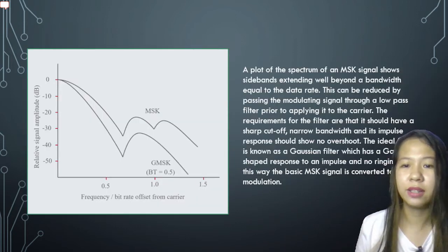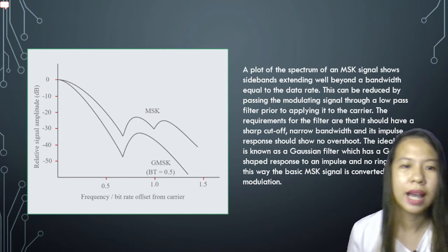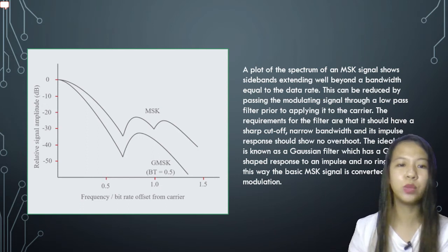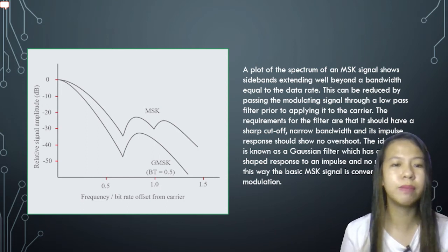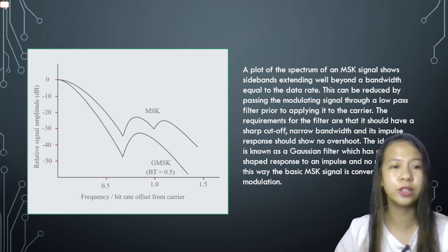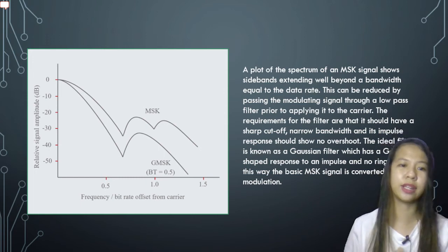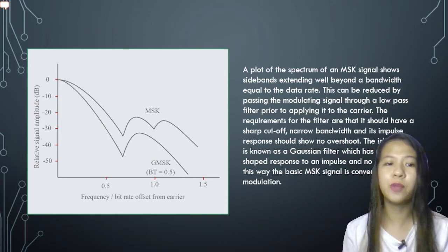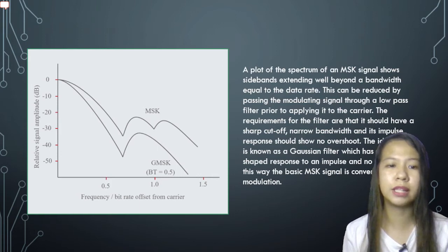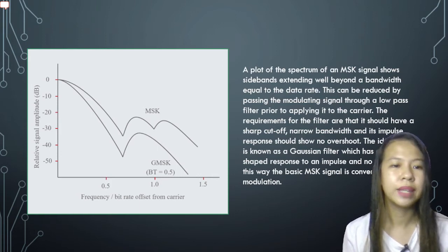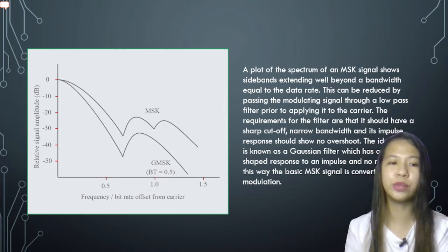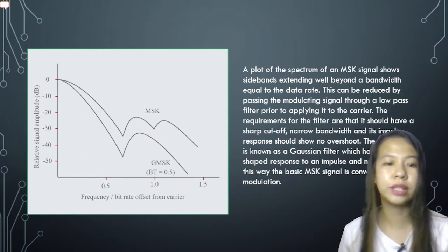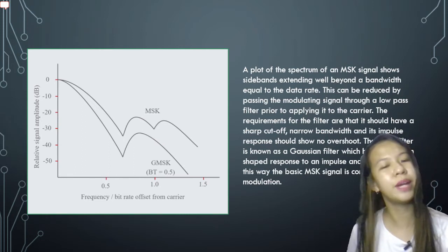As you can see in the graph here, a plot of the spectrum of an MSK signal shows sidebands extending well beyond a bandwidth equal to the data rate. This can be reduced by passing the modulation signal through a low-pass filter prior to applying it to the carrier. The requirements for the filter are that it should have a sharp cutoff, narrow bandwidth, and its impulse response should show no overshoot. The ideal filter is known as a Gaussian filter which has a Gaussian-shaped response to an impulse and no ringing. In this way, the basic MSK signal is converted to GMSK modulation.